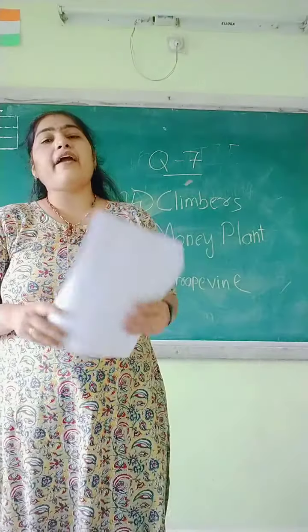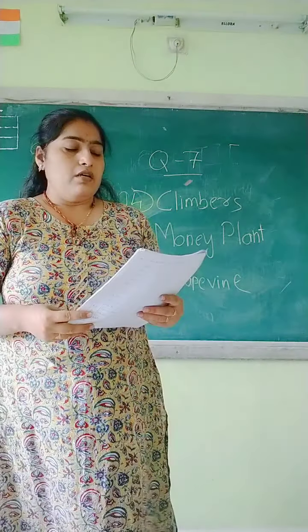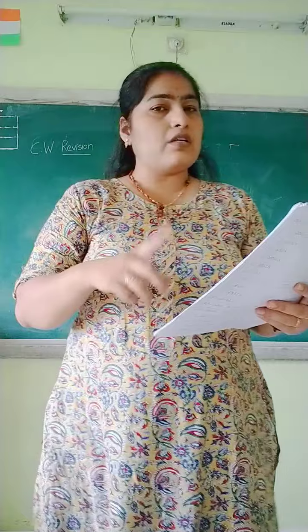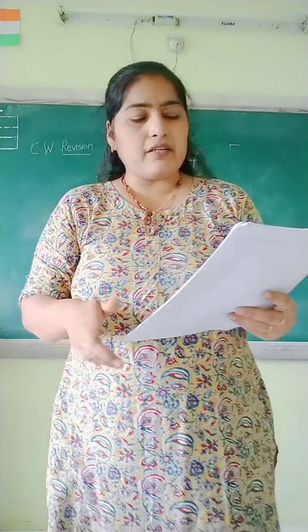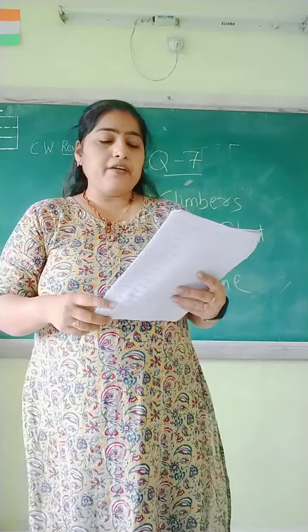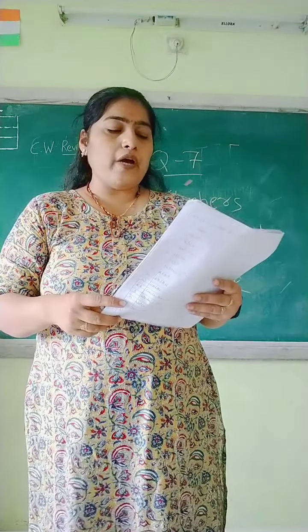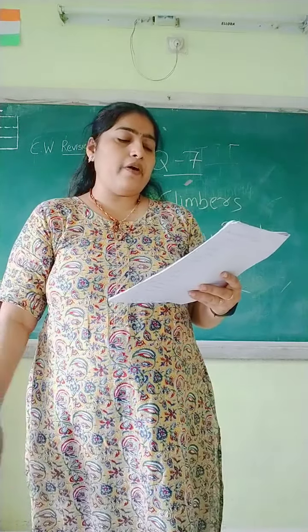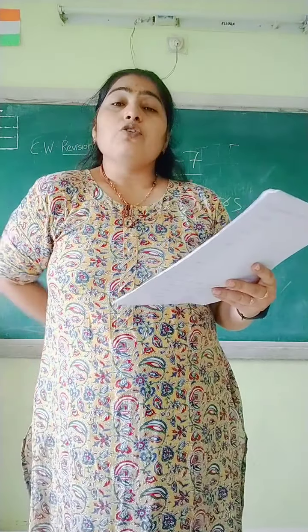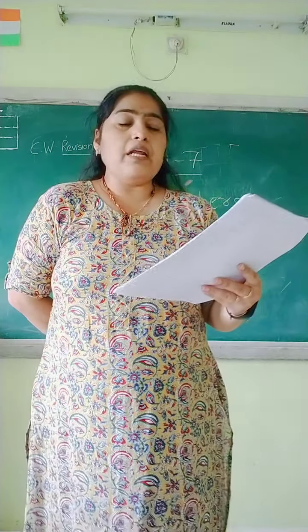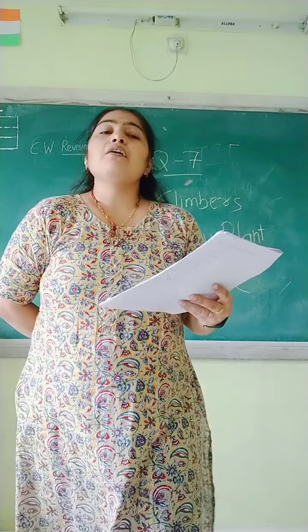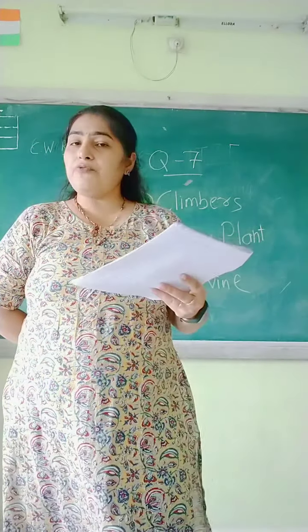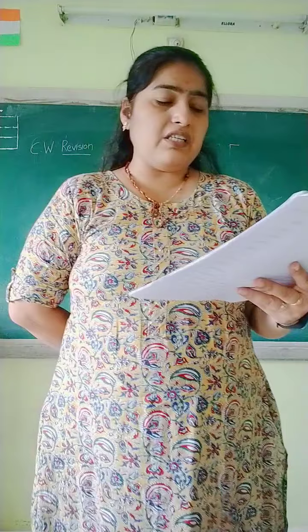Next: deer, lion, and cat. These are big animals, but cat is small. So circle cat. Then: pigeon, parrot, crow, and ostrich. Pigeon, parrot, and crow can fly, but ostrich cannot fly. So circle ostrich.